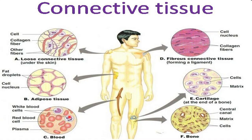For blood, the matrix is fluid — it is pure fluid, which we call plasma. The plasma contains the cells of connective tissue, which includes the formed elements: white blood cells, red blood cells, and lymphocytes. All these are floating within the fluid matrix, that is the plasma. This is also a specialized type of connective tissue.